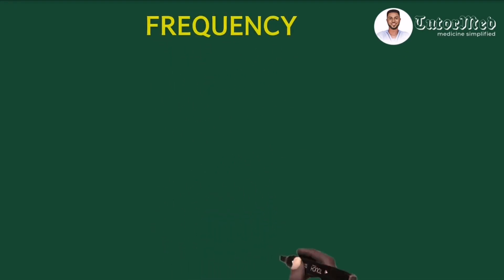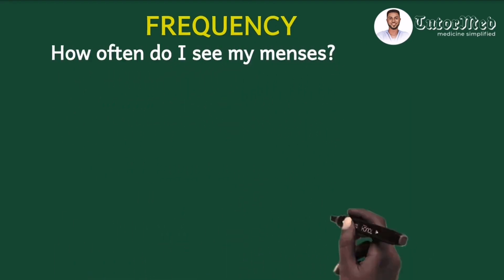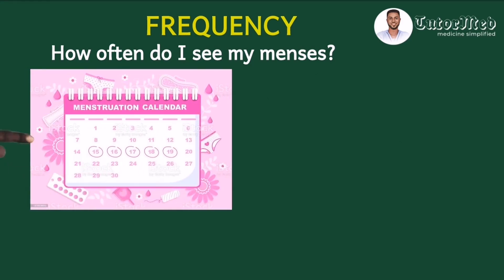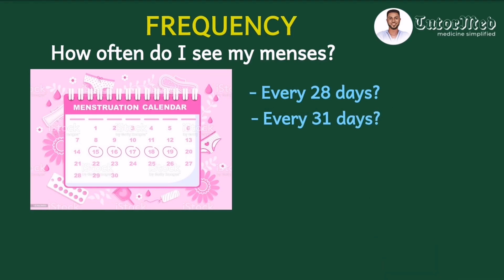F for frequency — we want to know the frequency of the menstrual cycle. We ask: how often do I see my menses? It is not enough to say you see your menses every month. Get a menstrual calendar and determine the number of days in between your periods — is it every 28 days, every 31 days? If you see your menses every 24 to 38 days, you have a normal frequency.